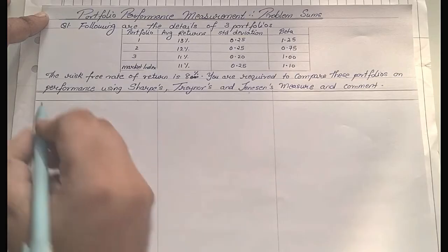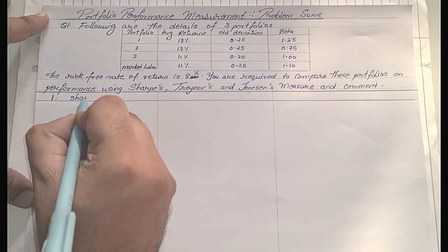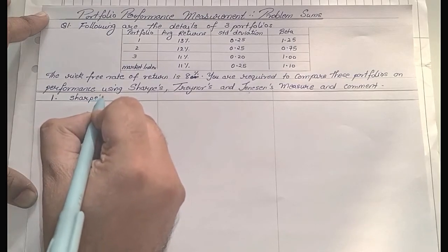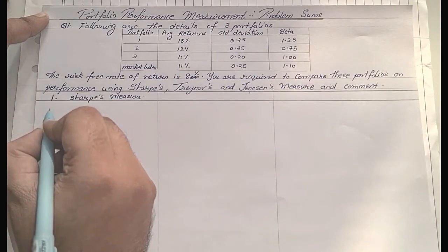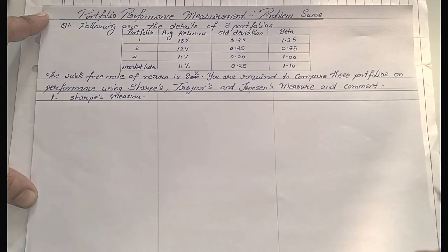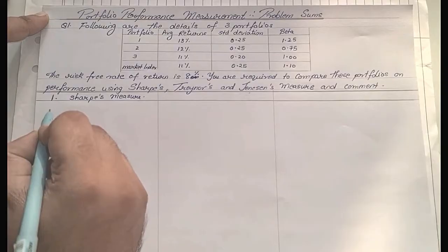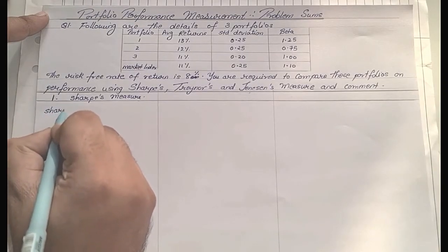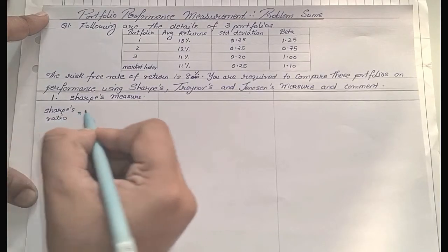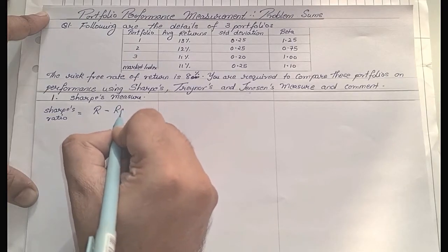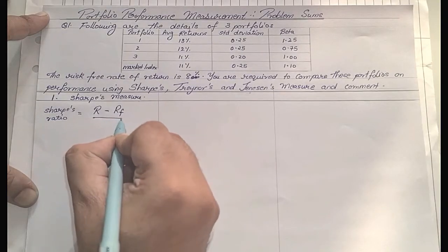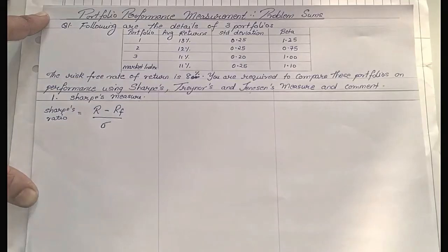We will start by solving using Sharpe's measure. The Sharpe ratio or measure formula is: Sharpe Ratio = (R − RF) / σ, that is average return minus risk-free return, divided by standard deviation. A very simple formula — average return minus risk-free return upon standard deviation.